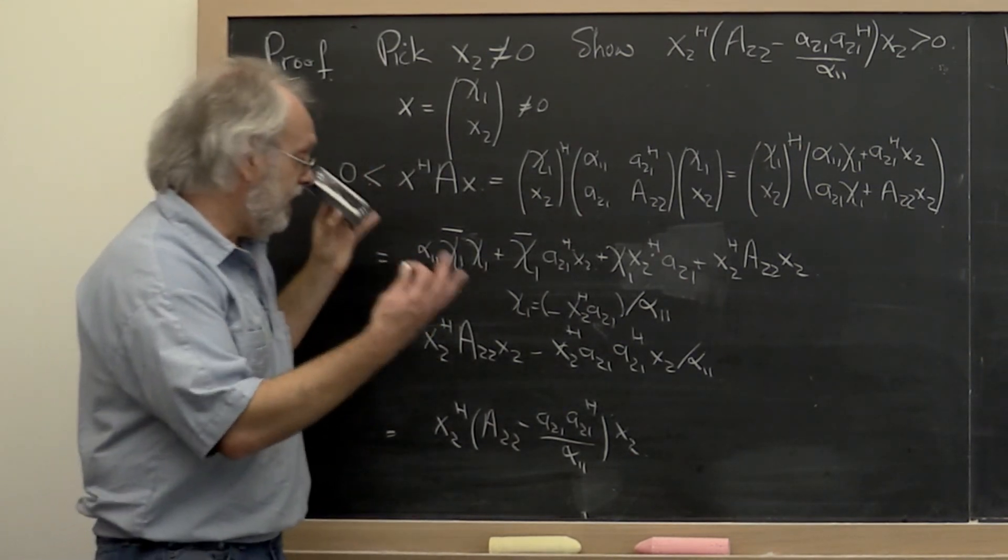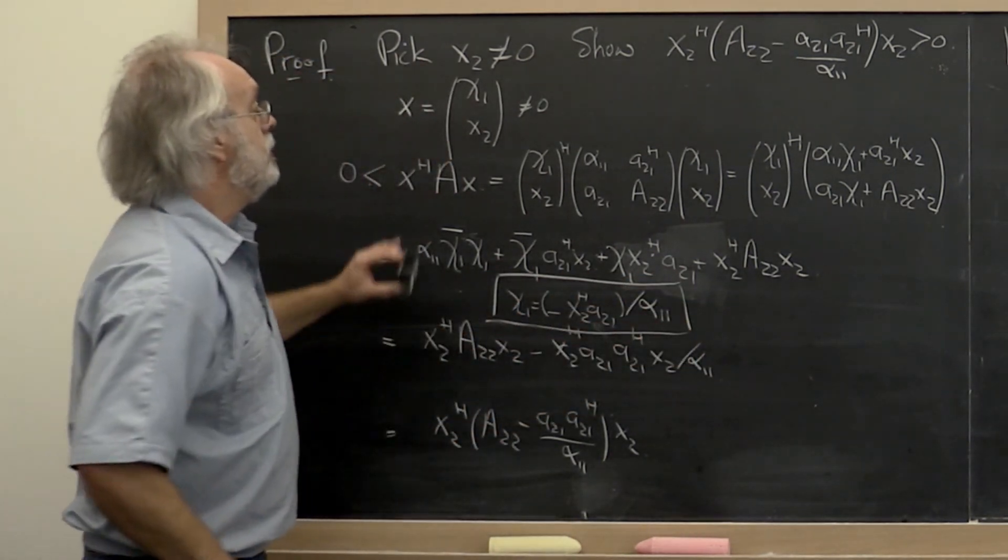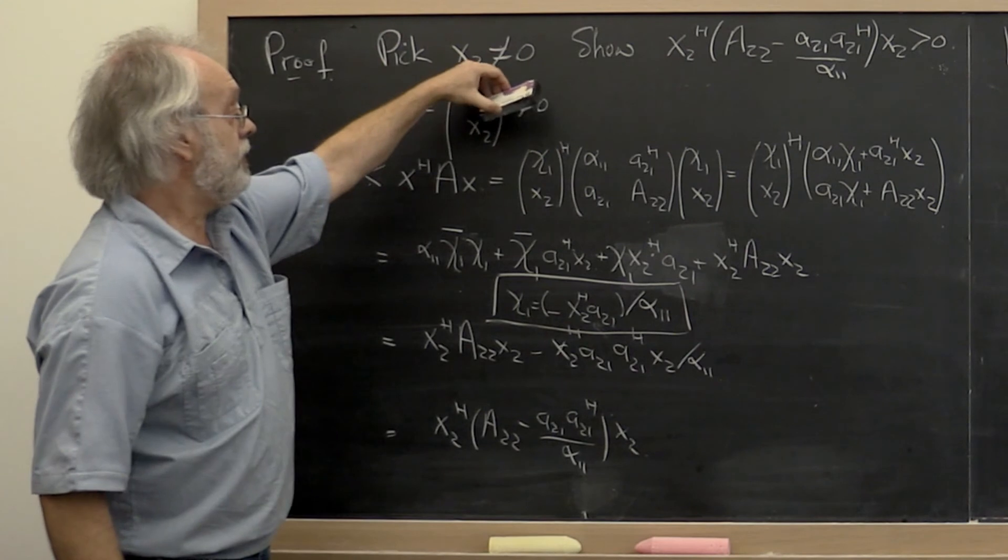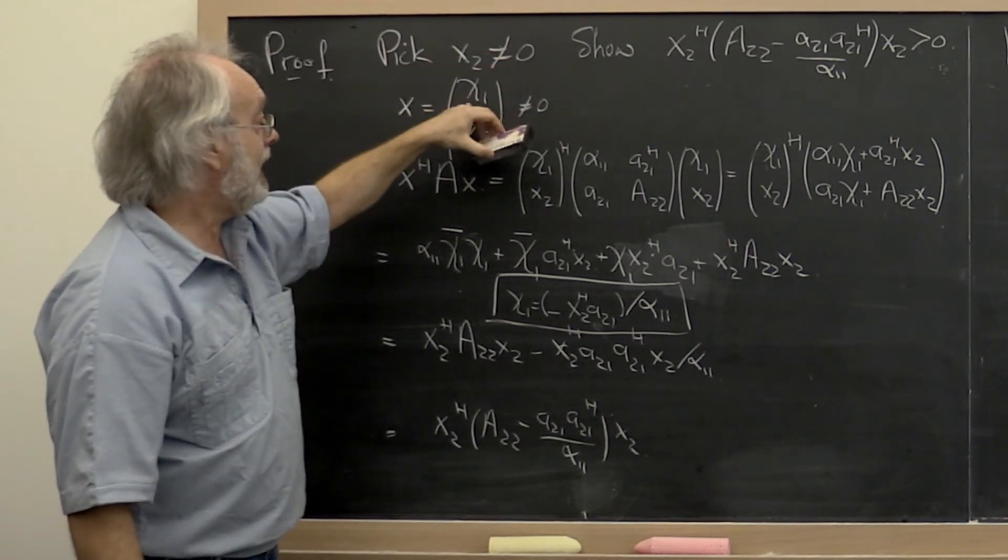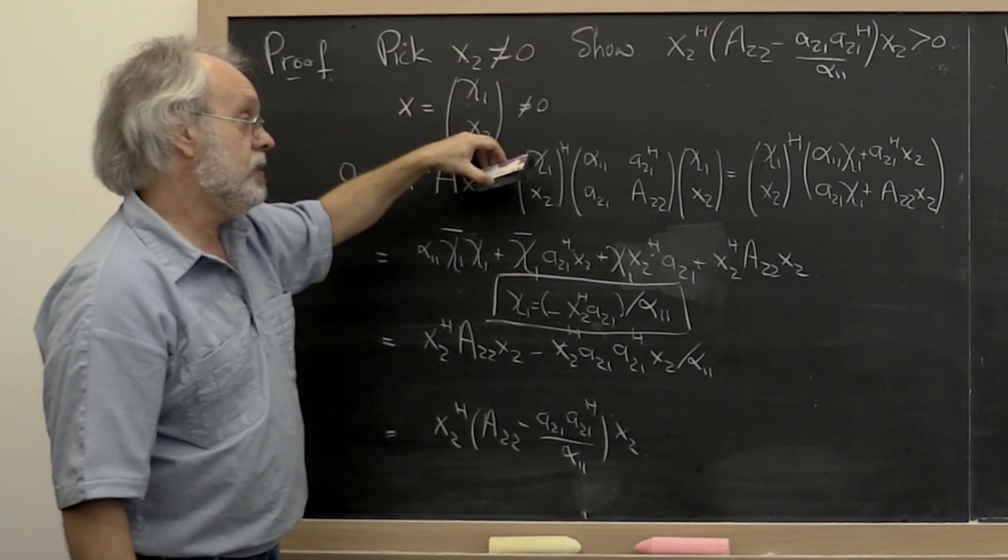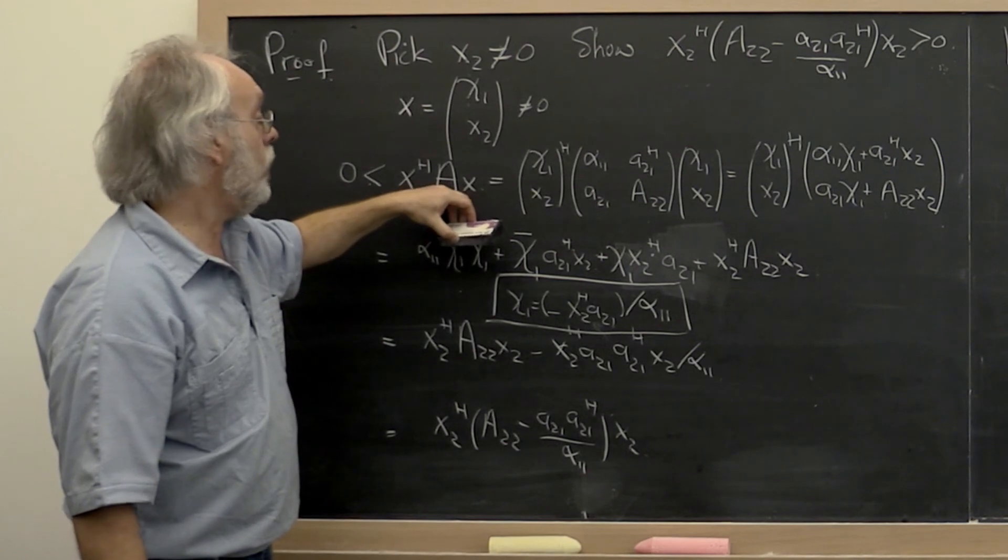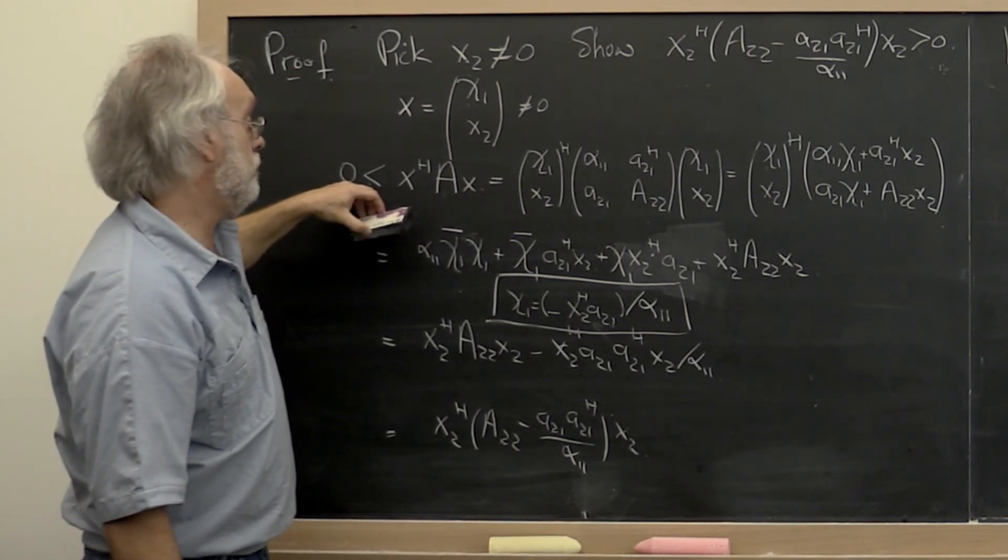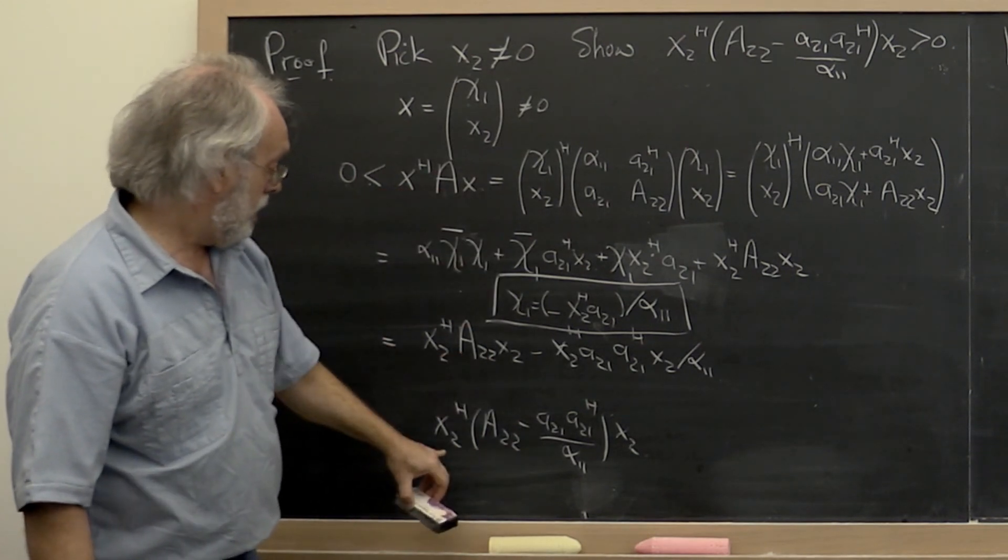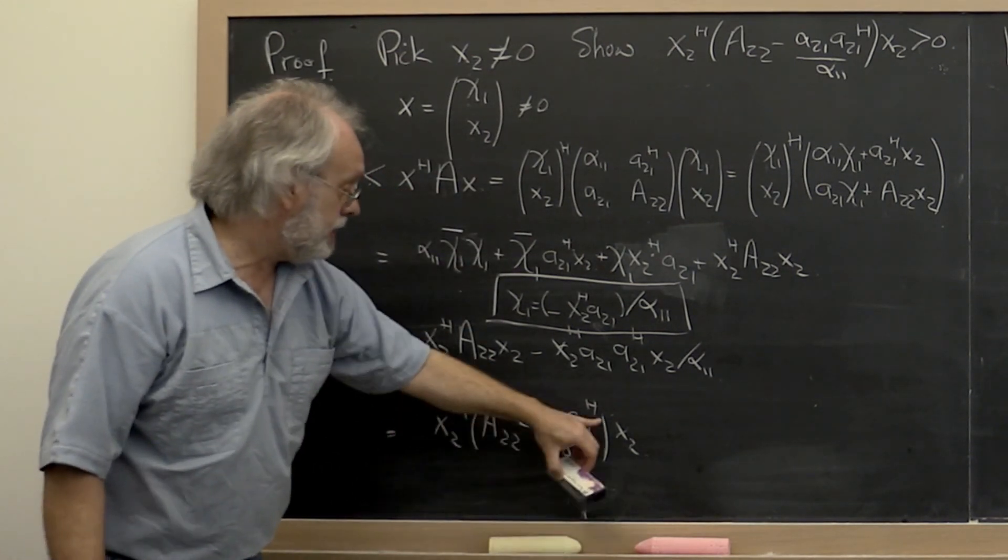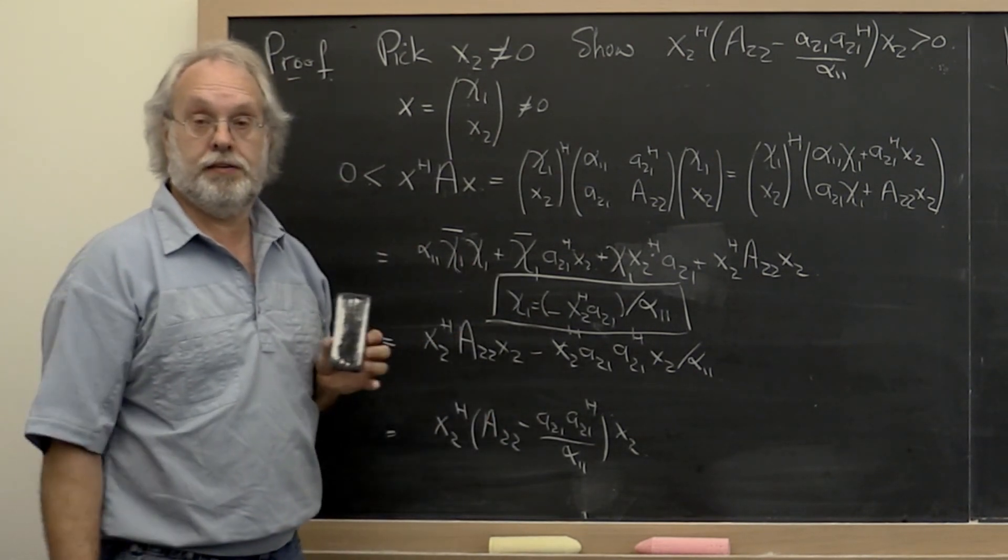So the point is given our x2, which is arbitrarily chosen, we can carefully construct a new vector that we can then use with A. And then knowing that A is Hermitian positive definite, that allows us to work out that this matrix right here, which is the matrix that we're after, is also Hermitian positive definite.